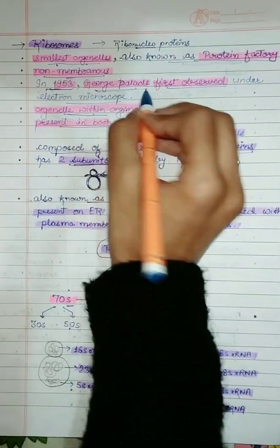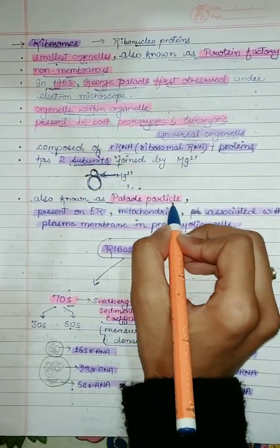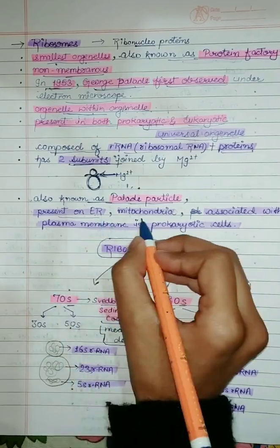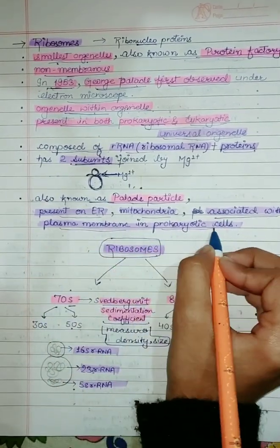As it was discovered by George Pallet, it is also known as Pallet particle. It is present on endoplasmic reticulum, mitochondria, and also associated with plasma membrane in prokaryotes.